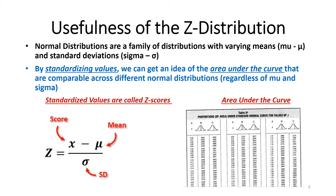As we talked about in previous lectures, normal distributions all share those unimodal, bell-shaped characteristics. But in order to further utilize the characteristics of the normal distribution in statistics, statisticians have standardized the values of normal distributions to give us an idea of the area under the curve. You may recall from our discussion about the sampling distribution of the mean that, as we start moving into inferential statistics and hypothesis testing, one of the key things is knowing the probability of getting a particular sample or finding in a research study.